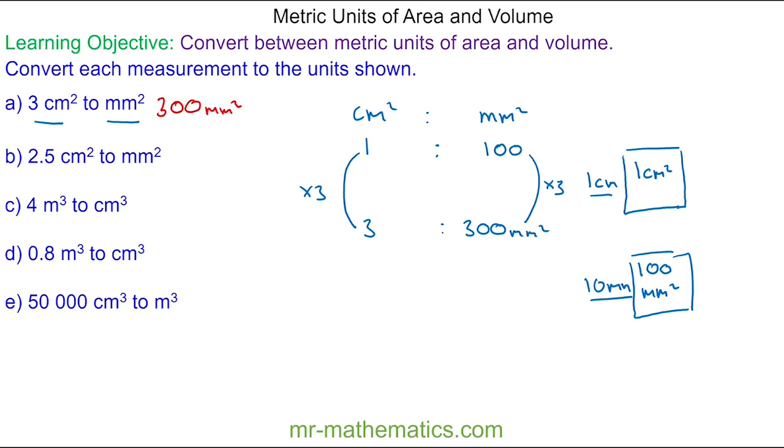Do you want to try equation B? You can pause the video and resume when you're ready. For 2.5 centimetres squared, we multiply the one by 2.5, and on the right side of the ratio we multiply 100 by 2.5, giving us 250 millimetres squared.